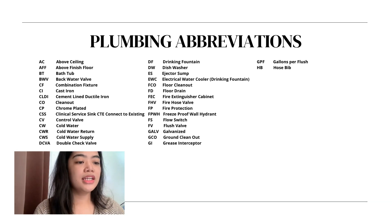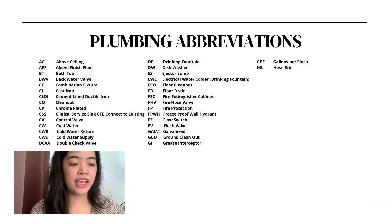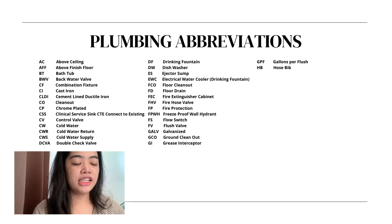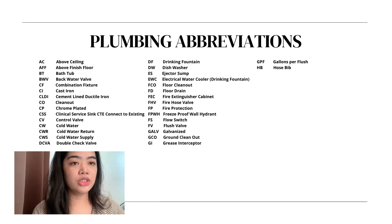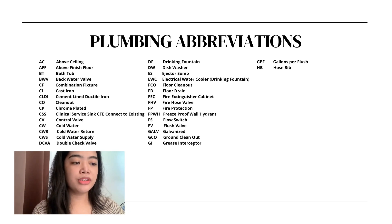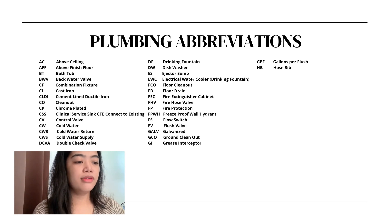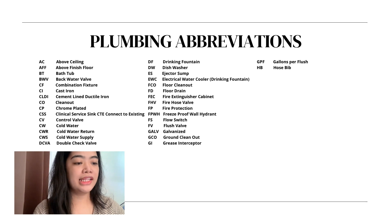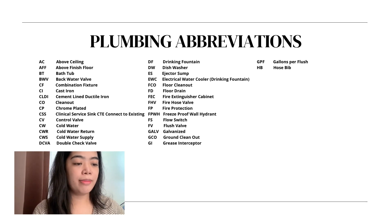CWS — cold water supply. DCVA — double check valve assembly. DF — drinking fountain. DW — dishwasher. ES — ejector sump. EWC — electrical water cooler. FCO — floor clean out. FD — floor drain. FEC — fire extinguisher cabinet.